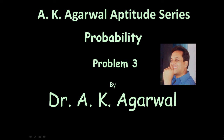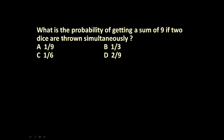Hello friends and welcome to AK Agarwal's aptitude series. In this session we are going to learn a technique for solving a problem on simple probability. The given problem is: what is the probability of getting a sum of 9 if two dice are thrown simultaneously?